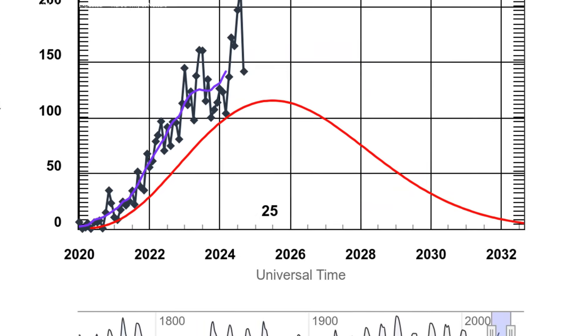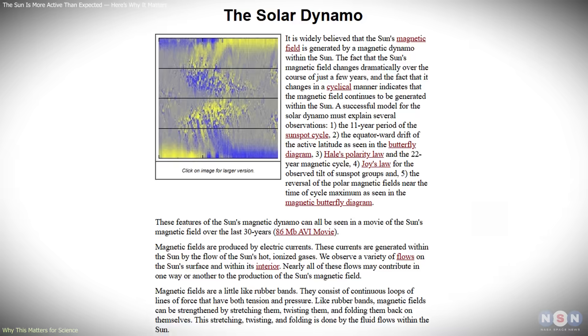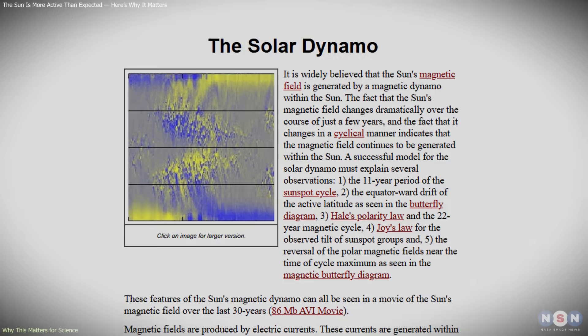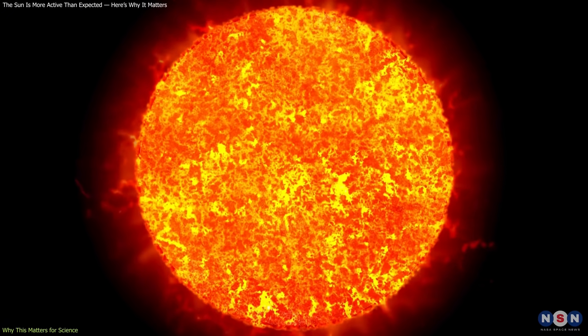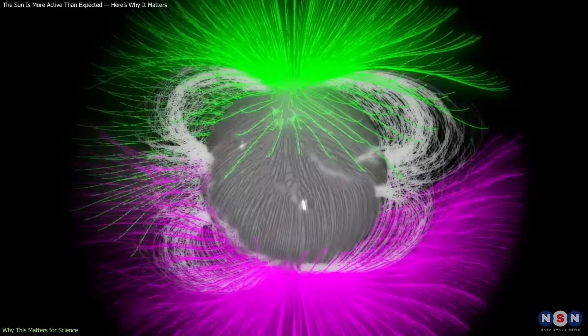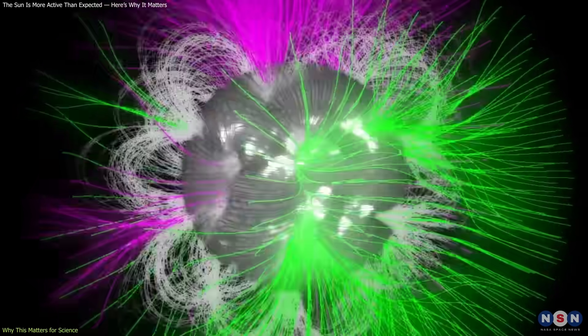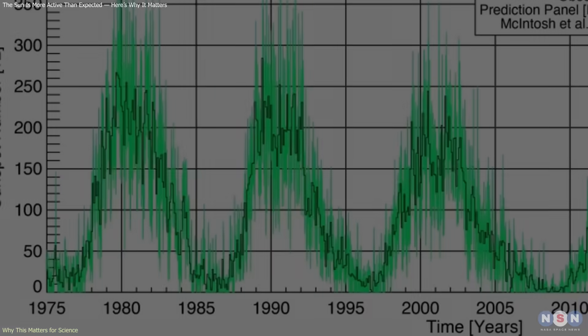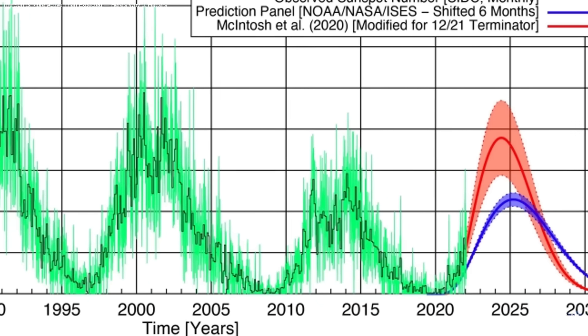The unexpected rise in activity challenges the way scientists think about the solar cycle. At its heart lies the solar dynamo—the process that generates the sun's magnetic fields. Models suggested that weakening winds and fewer sunspots pointed to a prolonged quiet phase. Instead, since 2008, the opposite has occurred. One idea is that the Hale cycle—a 22-year magnetic rhythm—plays a larger role than previously acknowledged. Each 11-year solar cycle may be just half of this longer process. If that's the case, then what looked like a weak period could simply have been one part of a bigger pattern.